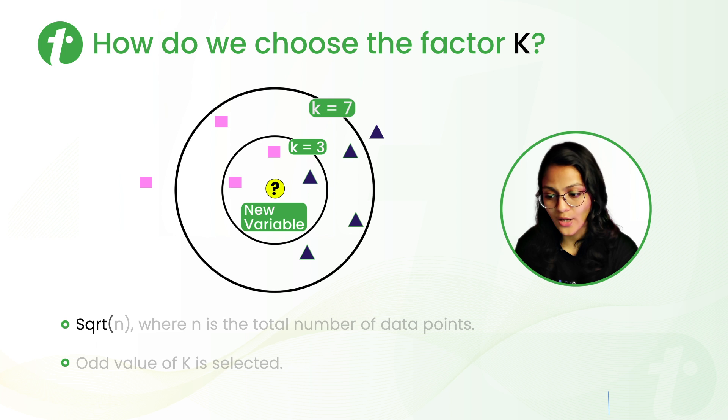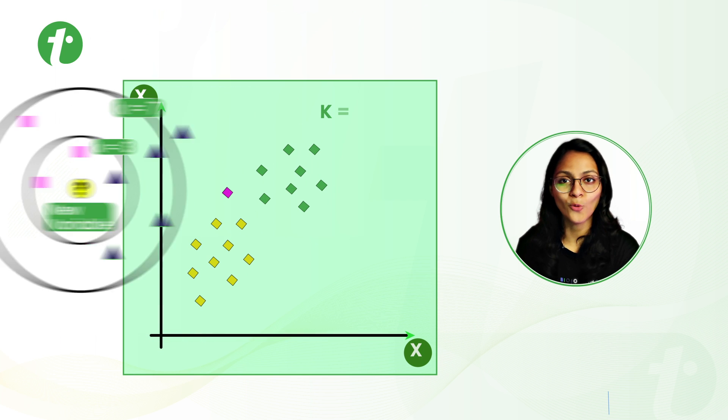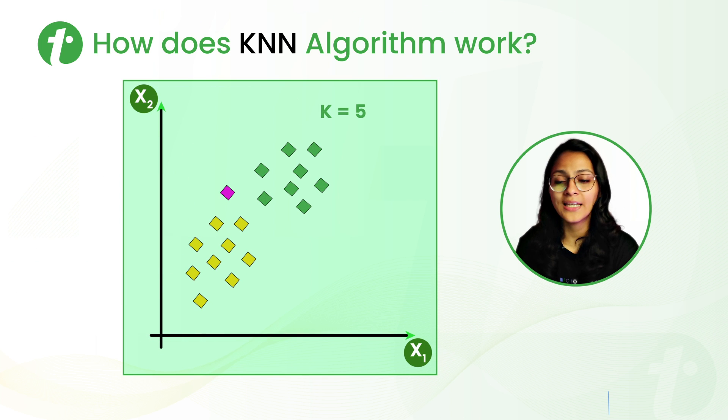Generally, we take the square root of N where N is the total number of data points, and we always consider the odd value of K to avoid tie breakers. Now, let's understand how does the KNN algorithm work with this example.